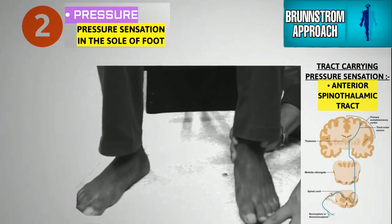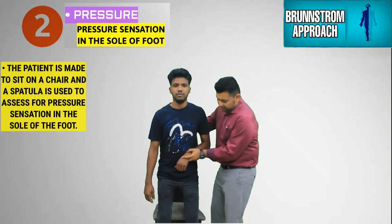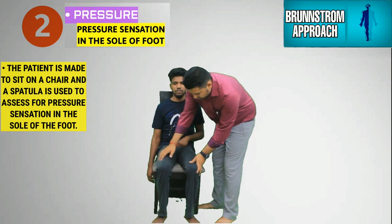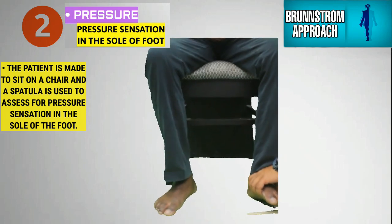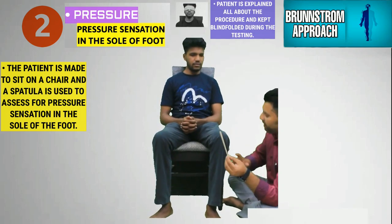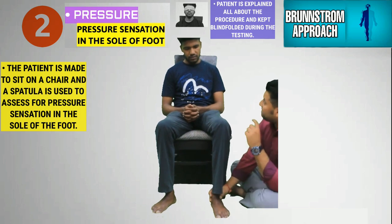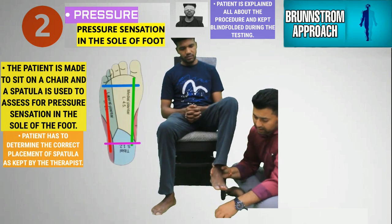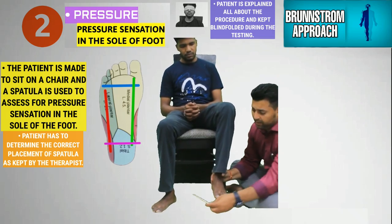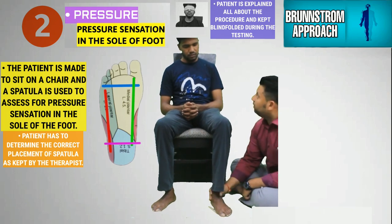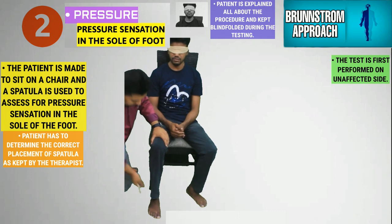The therapist now checks for pressure sensation in the sole of the foot. The patient is made to sit on a chair with both feet resting on the floor. A narrow flat object such as a spatula or the handle of a spoon is used in the test. The object is first shown to the patient, and then the patient is asked to determine whether the object has been placed against the sole of the foot all the way across the ball of the foot in a side-to-side direction, or against only the medial side, or against only the lateral side. The test is first conducted on the unaffected side.